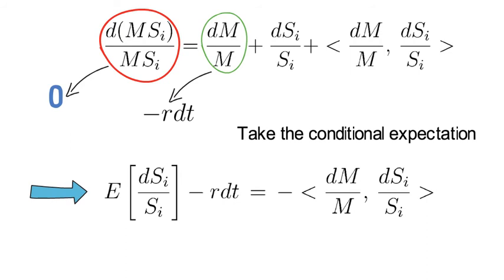It says that the conditional expected risk premium of asset i coincides in equilibrium with the negative instantaneous covariation of the asset's return with the stochastic discount factor of the economy.